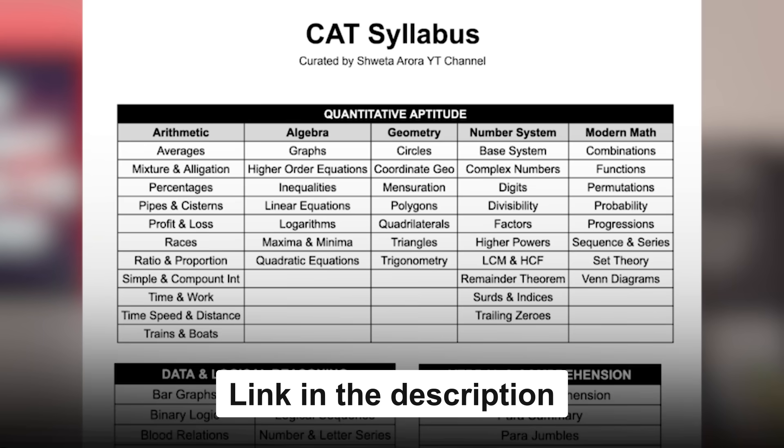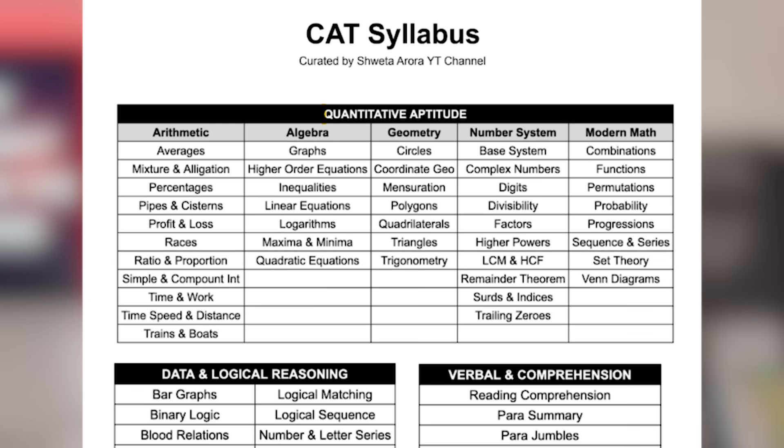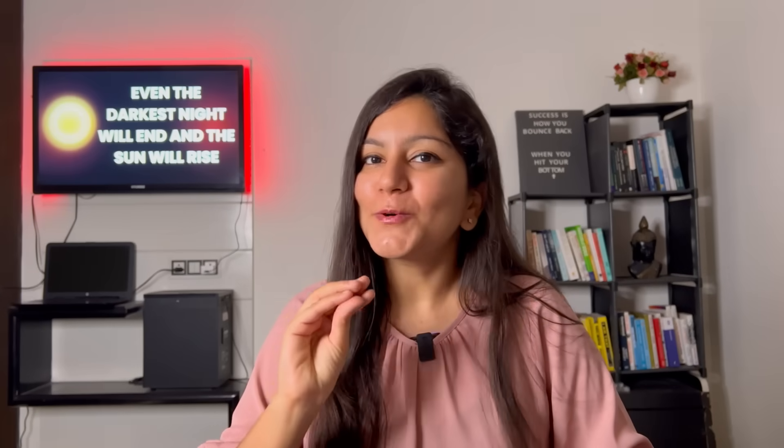I will add in the description this PDF with all the syllabus which is mentioned in the QUANT section. If you look at QUANT section, there are 5 major topics: Arithmetic, Algebra, Numbers System, Geometry, Modern Math. Under these, chapters are given. Most of the chapters are done in school.